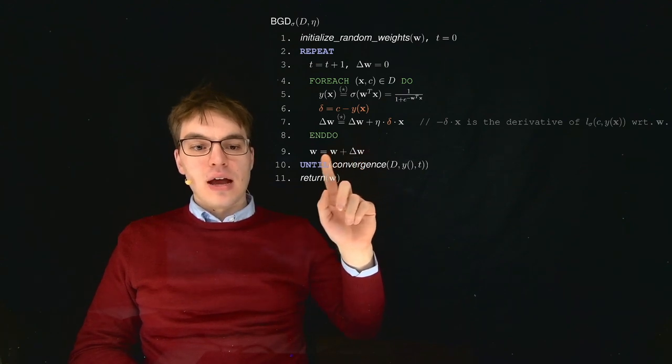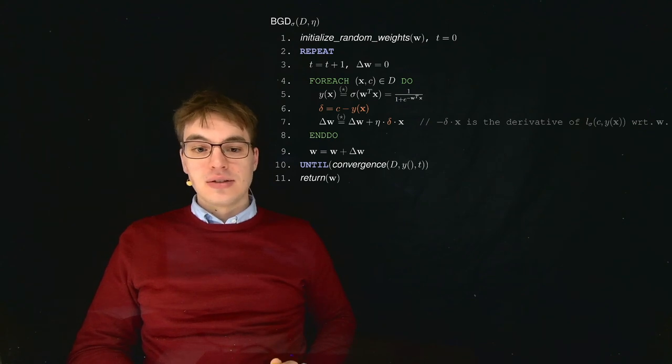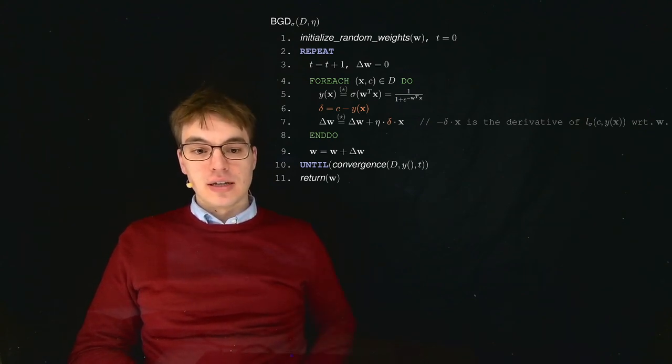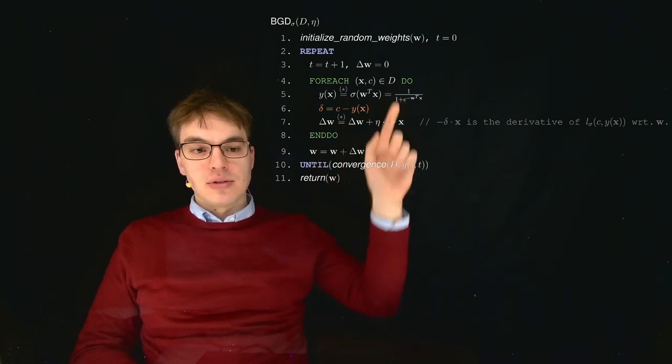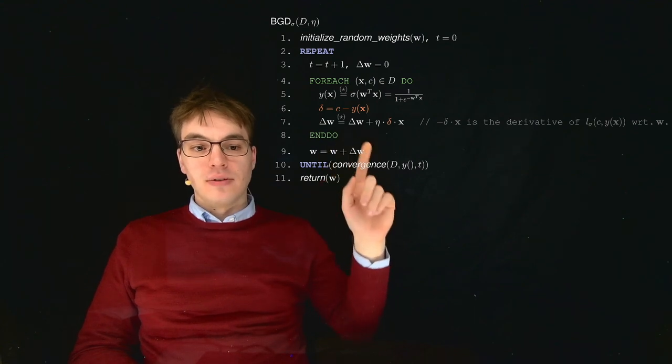This is used to update our W in one single large step, and this is where this 'batched' in batch gradient descent comes from. So all those examples are batched into one batch, and per batch we do one update.